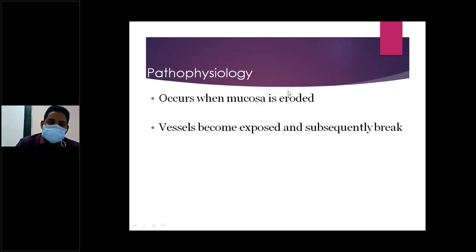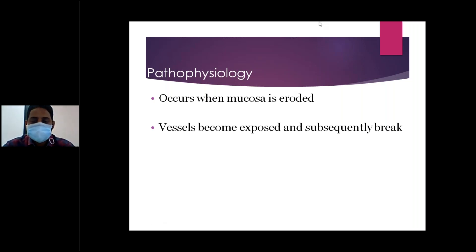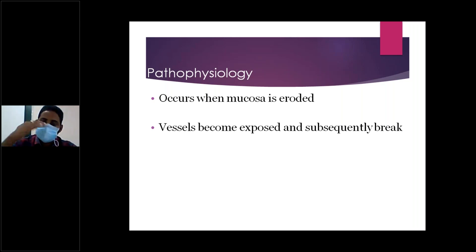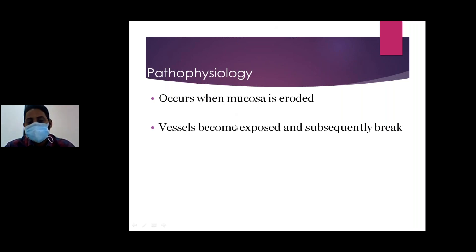Coming to the pathophysiology of epistaxis: as discussed, the mucosal vasculature — including the superior labial, ascending pharyngeal, ethmoidal, and sphenopalatine vessels — runs just below the mucosa with no skin covering. Whenever this mucosa is eroded, the vasculature is directly exposed to the environment and they rupture, leading to epistaxis.